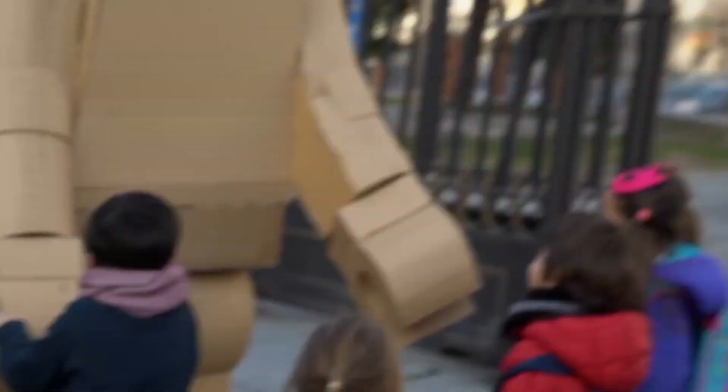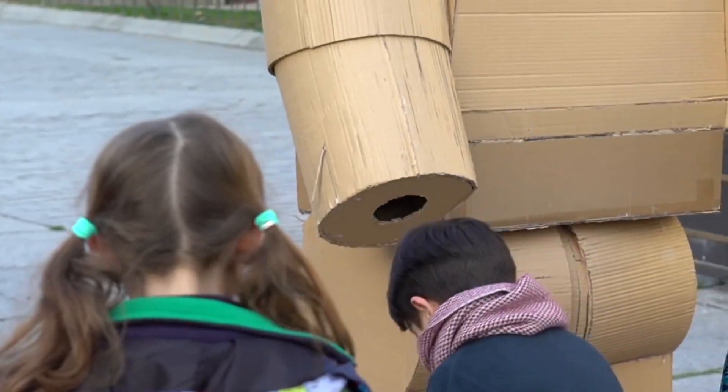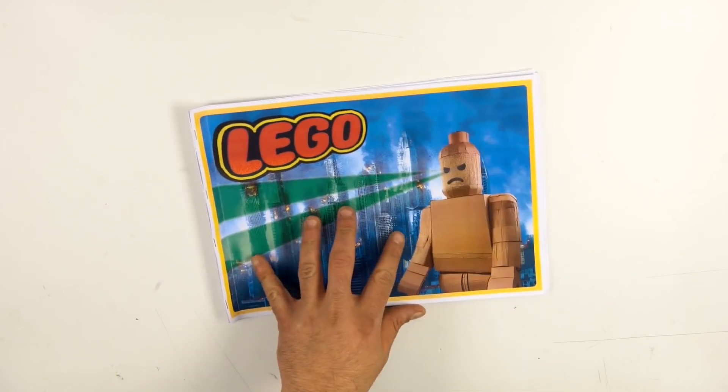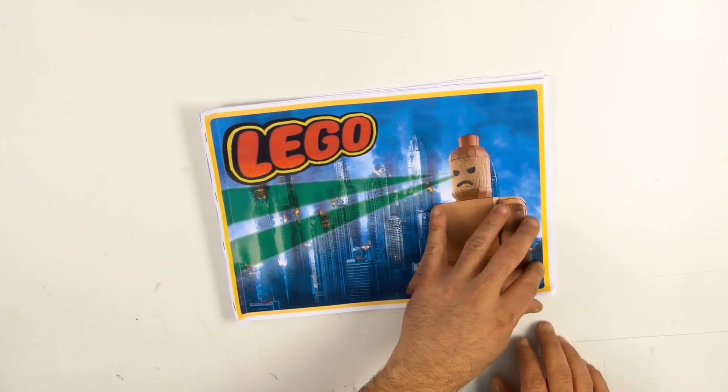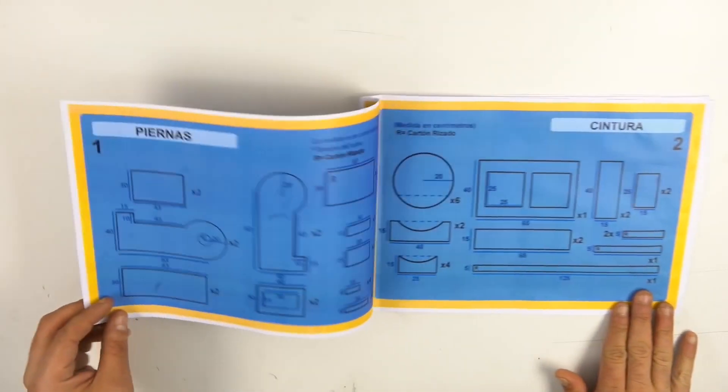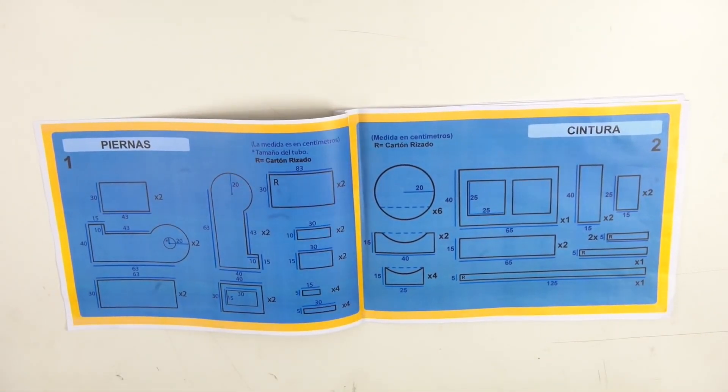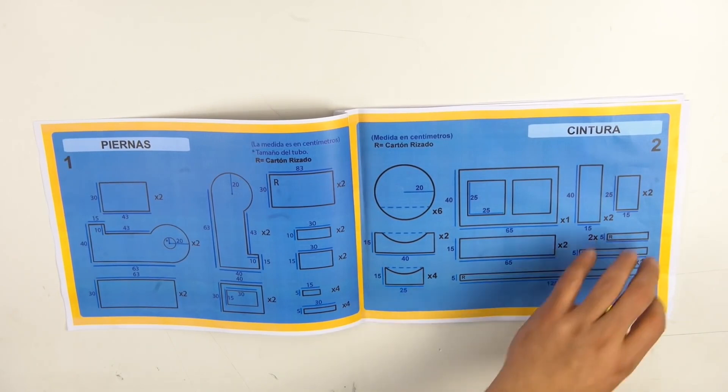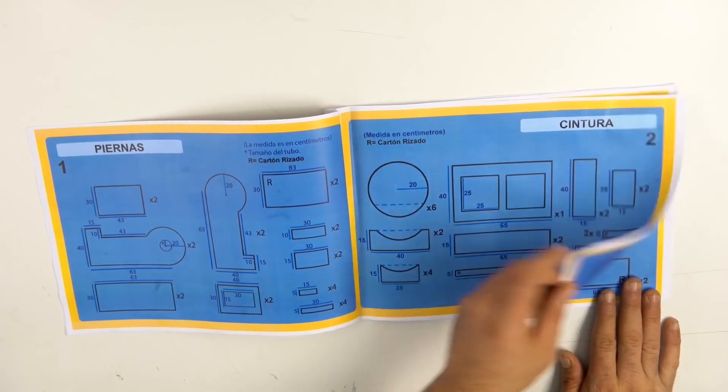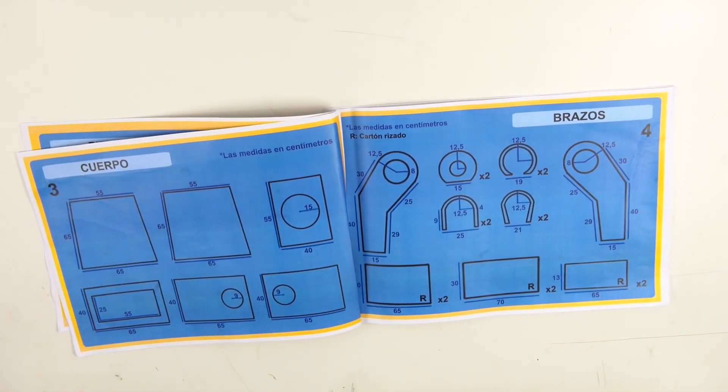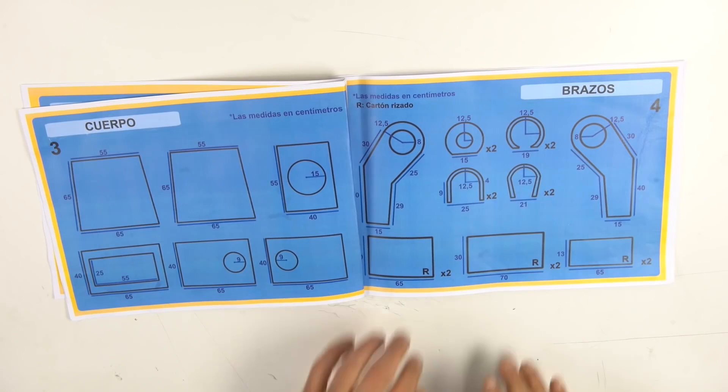Welcome to a new video, all of you craft addicts, because the carnivals are just around the corner. Today in Creative Minds, we are going to make a Lego costume over 2 meters high. But don't worry, because all the templates are in the description box below.